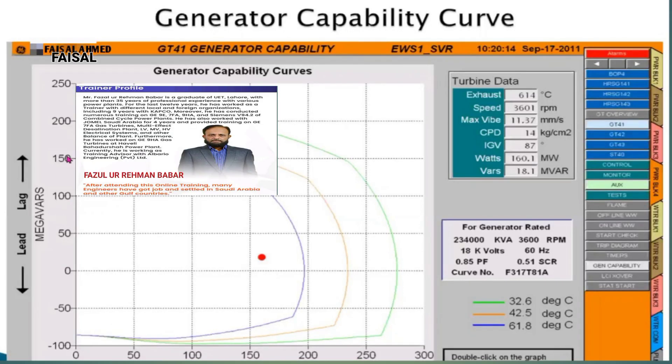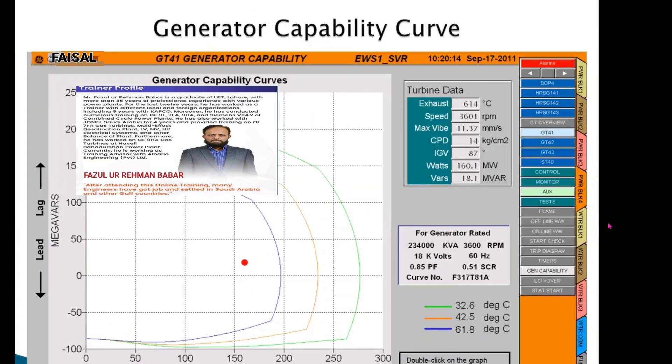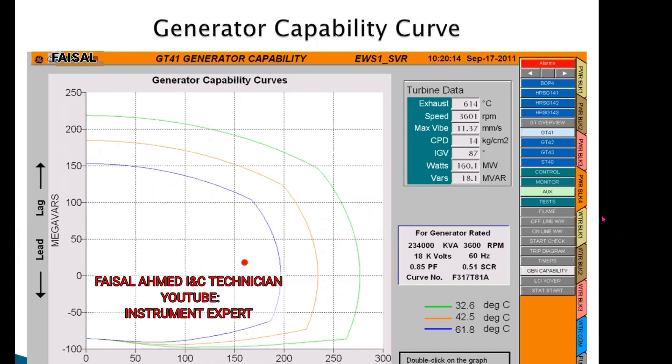This is the capability curve of the actual generator. In this capability curve you see different parameters. This is the zero point. If we go on the y-axis, these are the positive megawatts: 50, 100, 150. If we go below, minus 50, minus 100, these are the negative megawatts.